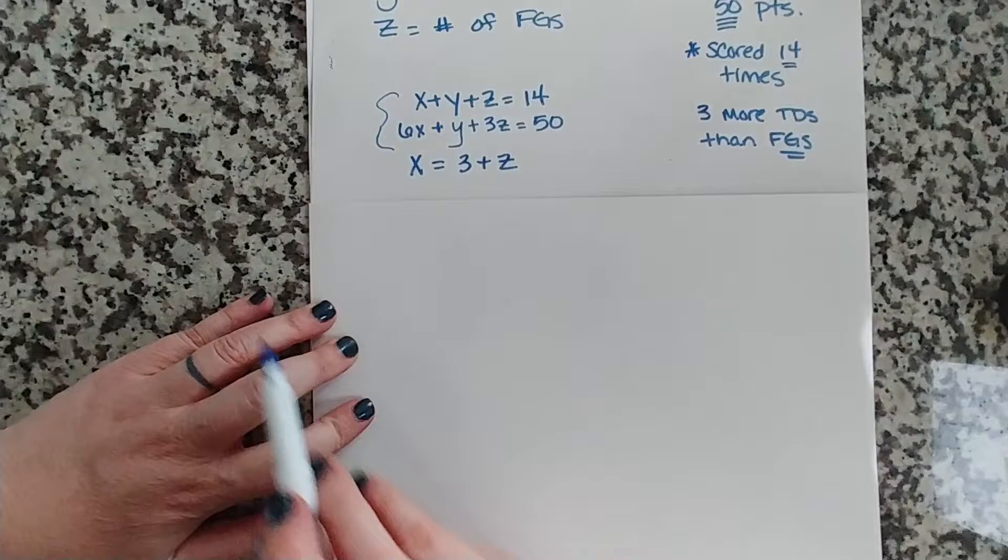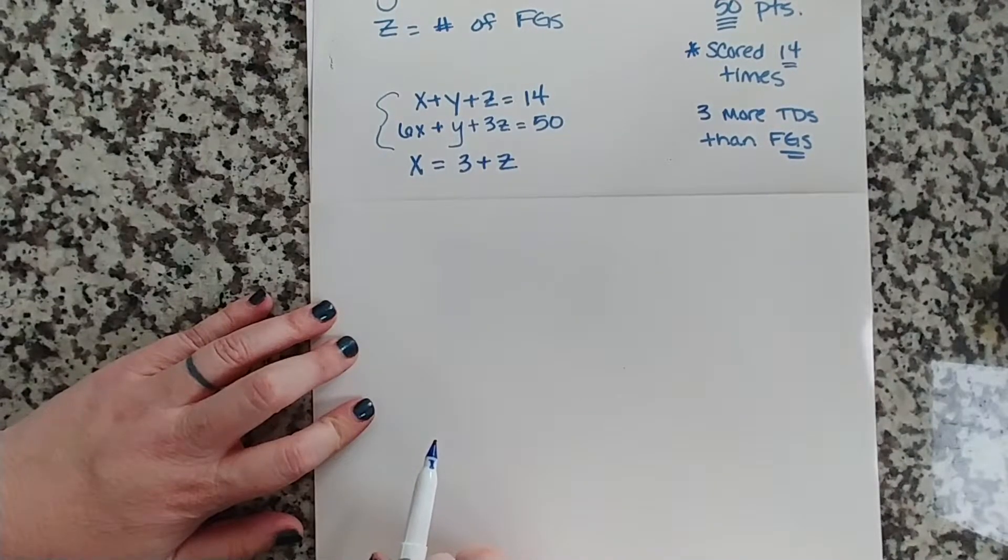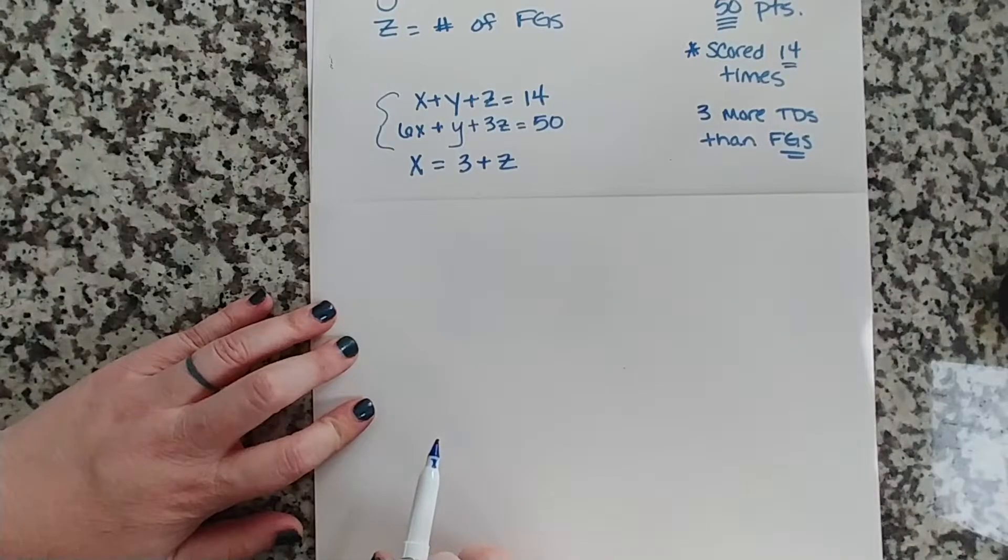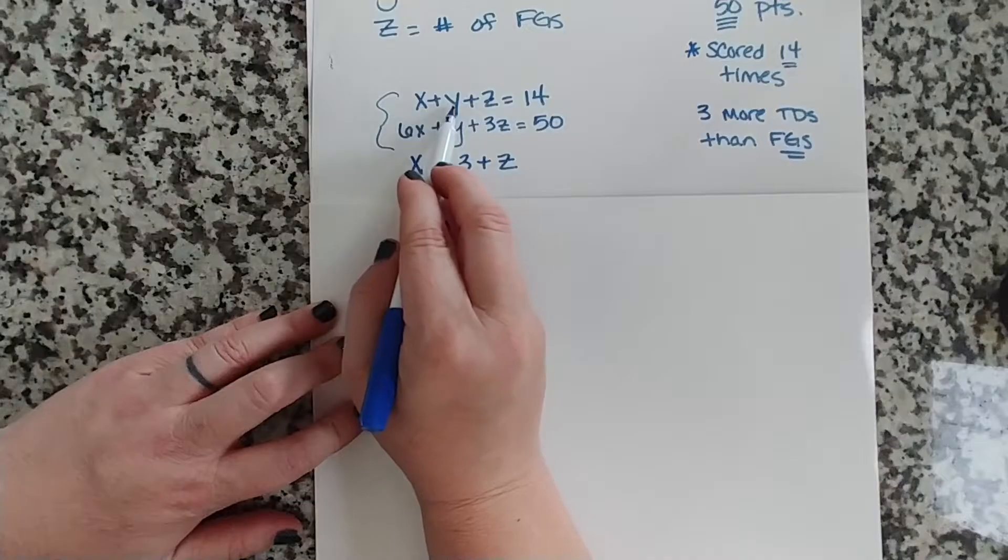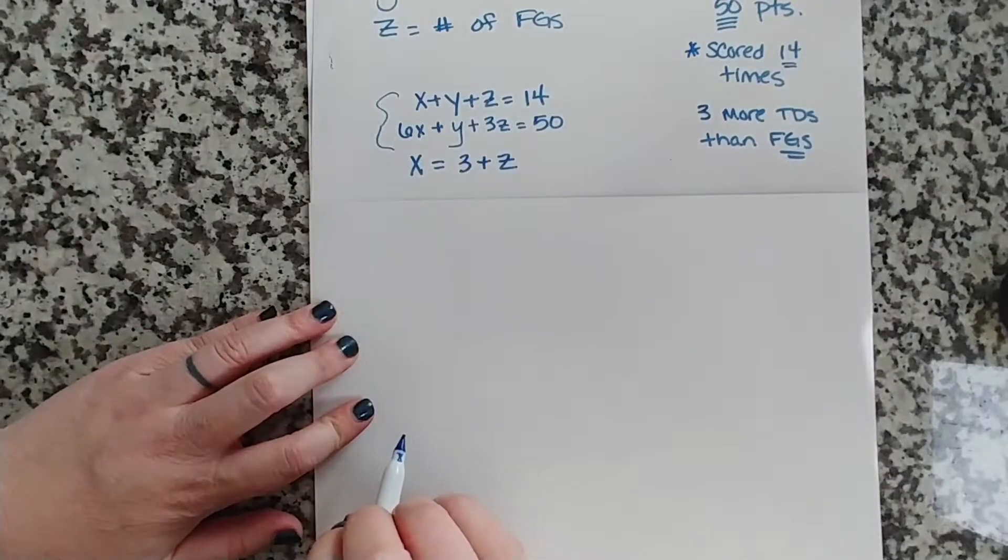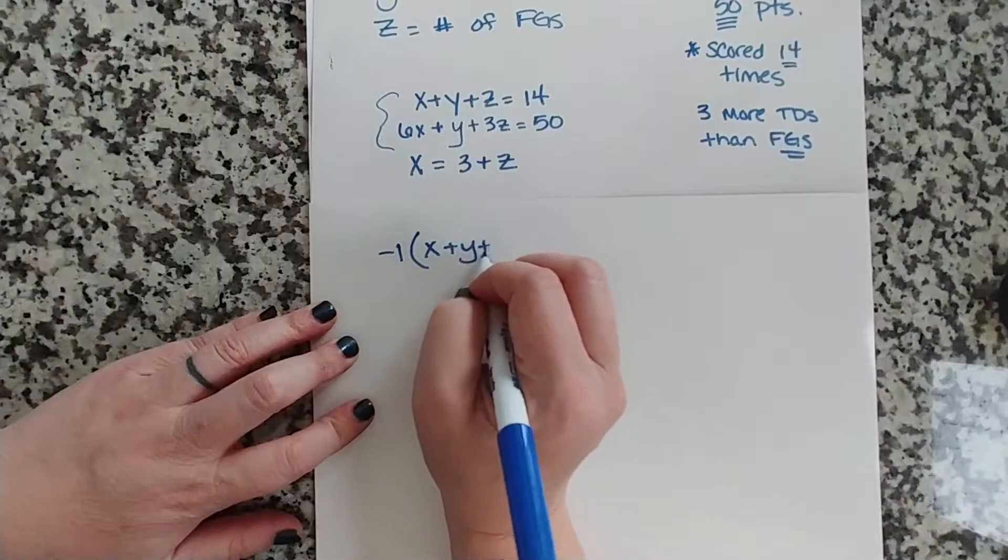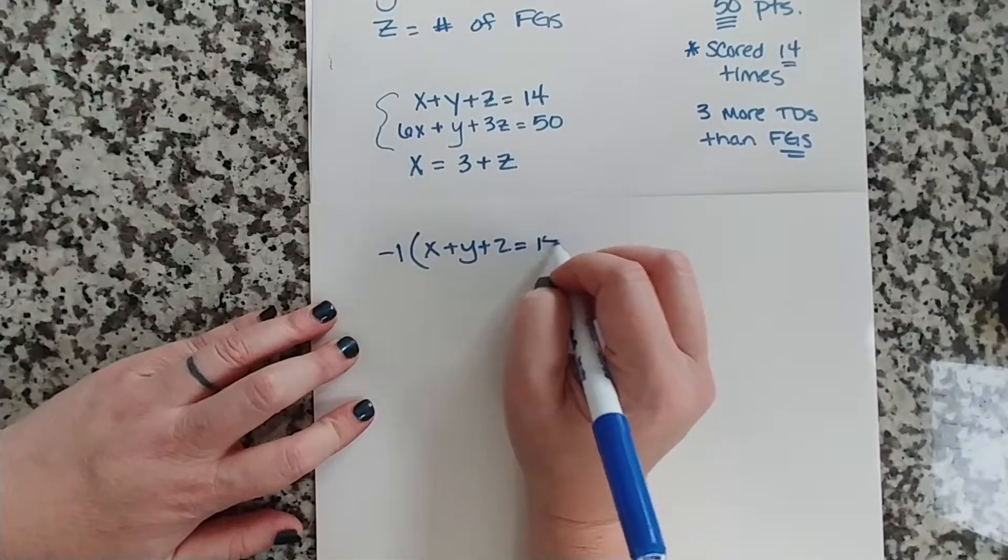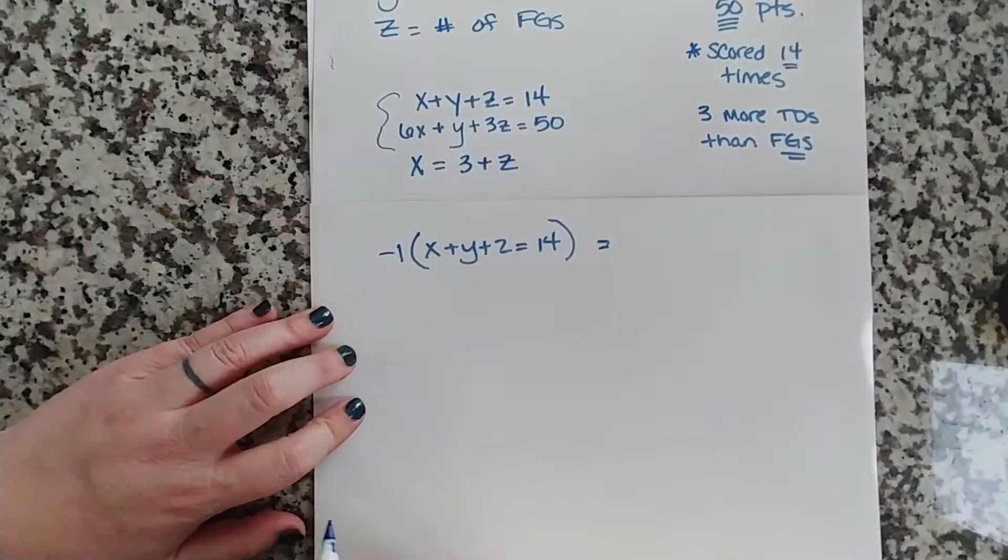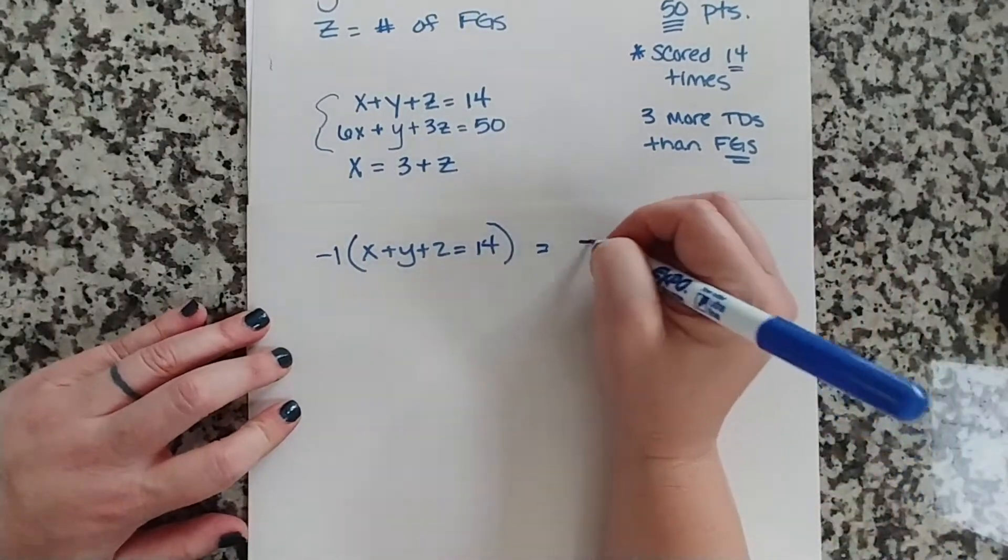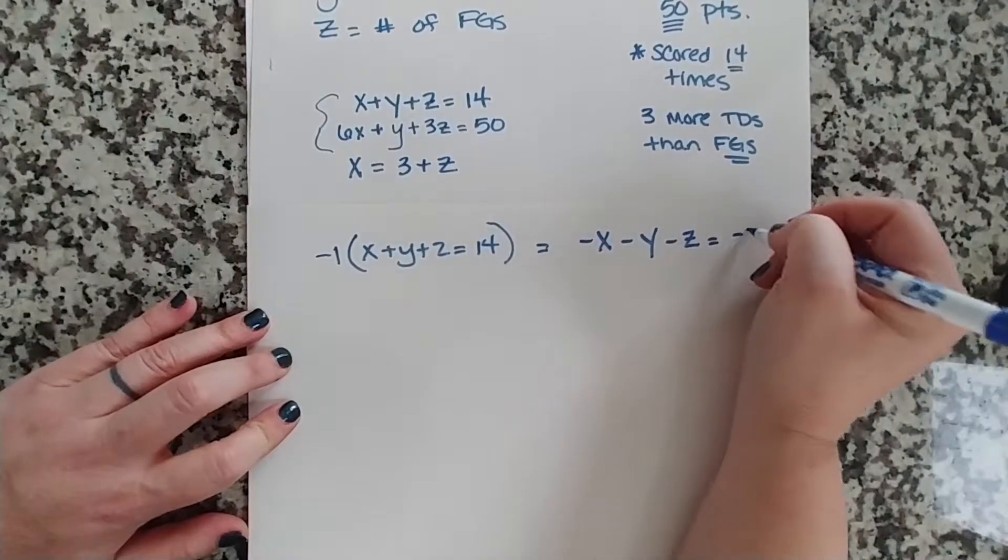And that's what we want to do. We want to, from these three equations, create two equations that have two variables, an X and a Z, so that we could solve it like a two-variable system that we're used to. So we're going to take X plus Y plus Z equals 14, and we're going to multiply it by negative 1. So X plus Y plus Z equals 14. All gets multiplied by negative 1, which will give us, very simply, negative X minus Y minus Z equals negative 14.